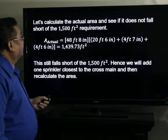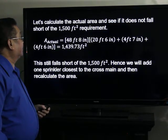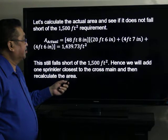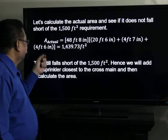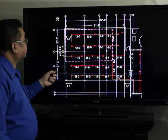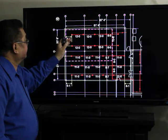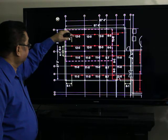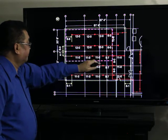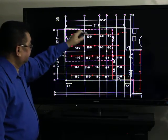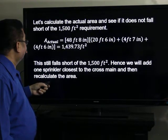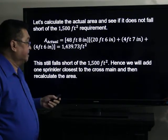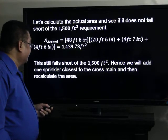Let's calculate the actual area and see if it doesn't fall short of the 1,500 square foot requirement. 48 feet 8 inches times 20 feet 6 inches plus 4 feet 7 inches plus 4 feet 6 inches here. This area, 6 feet 8 inches, 12, 12, 12, 6, times this distance here 10 feet 6 inches and 9 feet 7 inches plus 4 feet 6 inches plus the distance here will be 1,439.73. This is still short of the 1,500 square feet, hence we will add one sprinkler closest to the cross-main and then recalculate the area.